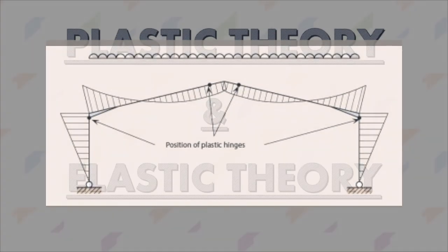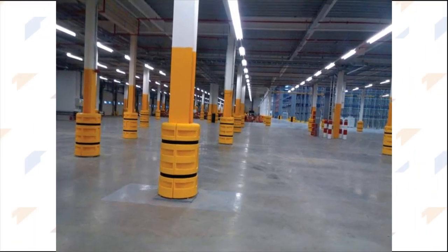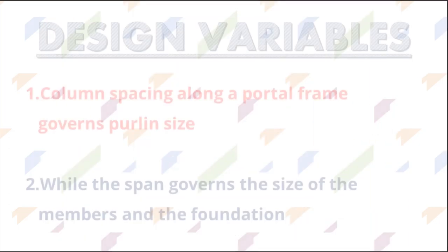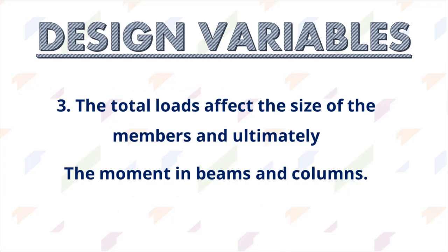Now, regarding design variables: column spacing along a portal frame governs the purlin size, while the span governs the size of the main members and the foundation. The total loads also affect the size of the members and ultimately the moment in the beams and columns. It's important to note that we can adjust column spacing to reduce these effects.